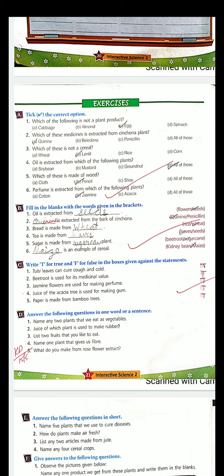Now oil is extracted from which of the following plants? So options are soya bean, mustard, groundnut or all of these? Answer will be all of these. Why? Because we get oil from mustard also, soya bean also and groundnut also.